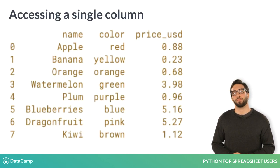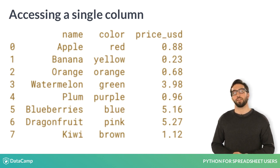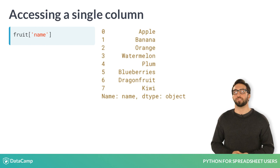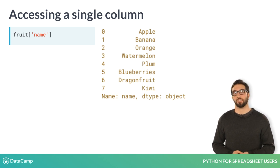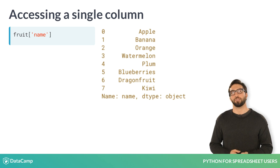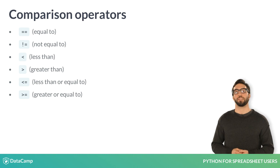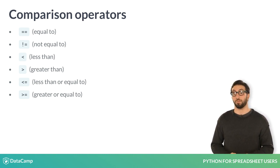Recall our fruit data frame with name, color, and price columns. If we wanted to access just the name column, we would put brackets next to fruit and place name in quotations within those brackets. The result is a pandas series object, which you can think of as just the contents of your column. We can then use comparison operators, like equal to or not equal to, to get logical true-false values for each entry in that column.